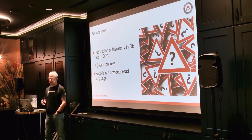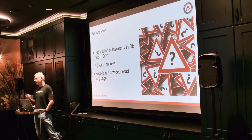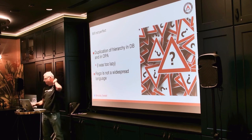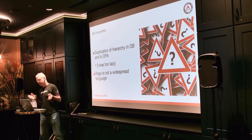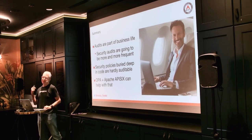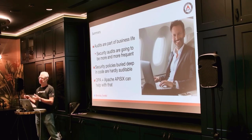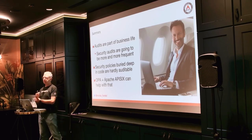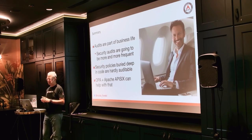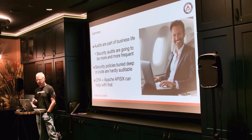The demo is still not perfect, but regardless of the little issues. At the moment, I still have the duplication of hierarchy in the DB and in OPA — I was too lazy. You can do the same thing by having a job that reads from the database and syncs changes. And Rego is not a super great language, but still we have something working. You need to be prepared that audits are going to be more and more frequent — either because companies want plausible deniability that they did everything they could to prevent security bad stuff, or because they actually care about it. For that, you need to do something on the engineering side. Burying your security code inside the app — I don't think it's going to cut it anymore. OPA and Apache APISIX make a great duo.